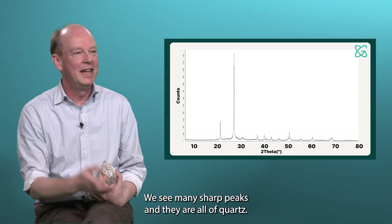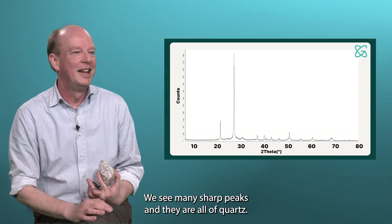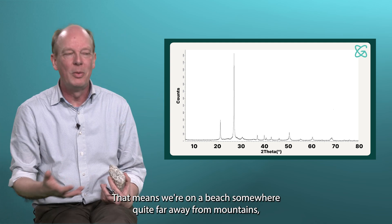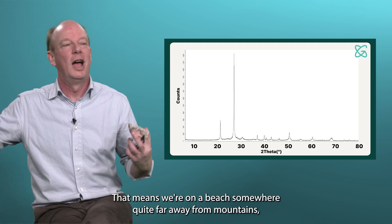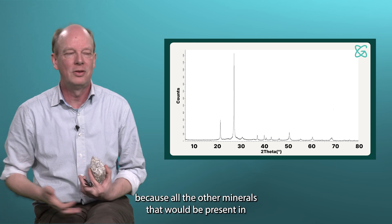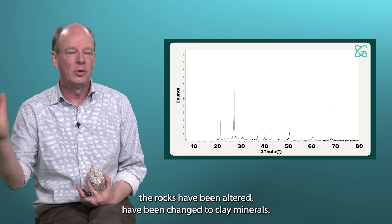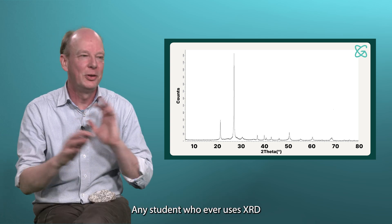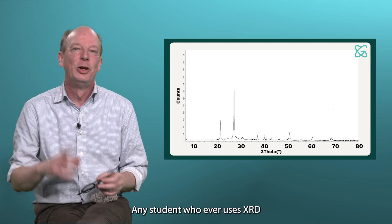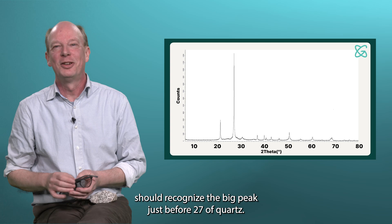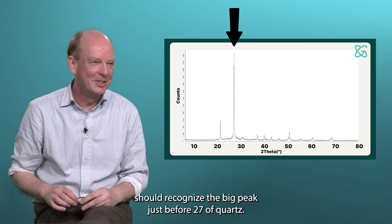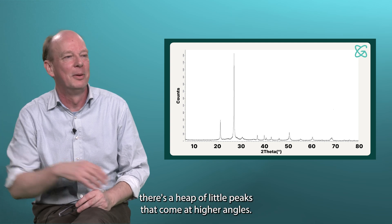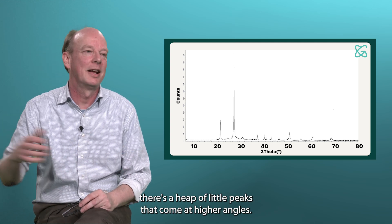And that's what we see here — many sharp peaks and they are all quartz. That means we're on a beach somewhere quite far away from mountains, because all the other minerals that were present in the rocks have been altered to clay minerals and washed away. Any student who ever uses XRD should recognize the big peak just before 27 degrees of quartz, and if the other one just beyond 20 is there, then quartz.